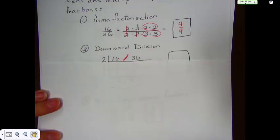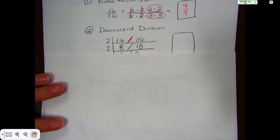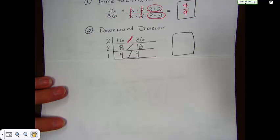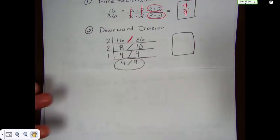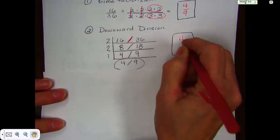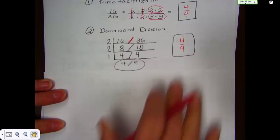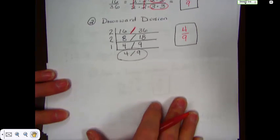They're both even, so we divide both of them by 2. 16 divided by 2 is 8, 36 divided by 2 is 18. And because they're still both even, we would have to divide them again by 2, and you get 4 and 9. Now the only number that goes into 4 and 9 is 1, so you end up with 4 and 9. And that, coincidentally, is the same thing that we got when we used prime factorization. So, it works. It works both ways.